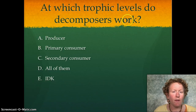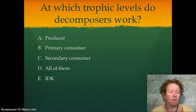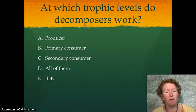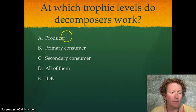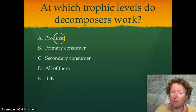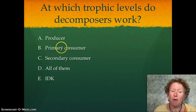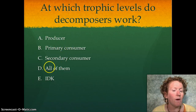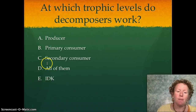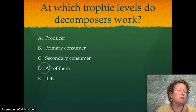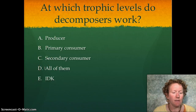At what trophic level do decomposers — detritivores being a type of decomposer — work? The producer level, the primary consumer level, the secondary consumer level, or all of them? If you guessed all of them, you're absolutely correct.